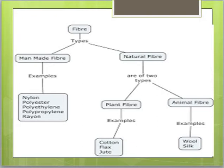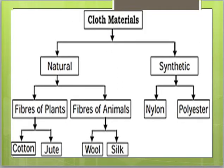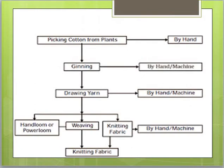In plant fibers, jute, flax, and cotton are given, but your syllabus will focus particularly on cotton, flax, and jute. I have also given much importance to cotton and jute in these videos. Natural fibers include plant and animal types, while synthetic fibers are man-made and synthesized in laboratories.